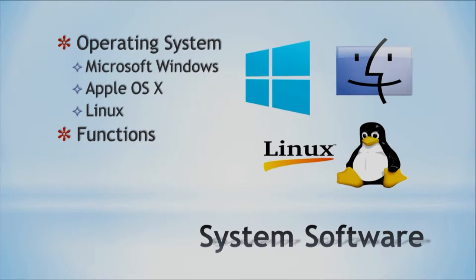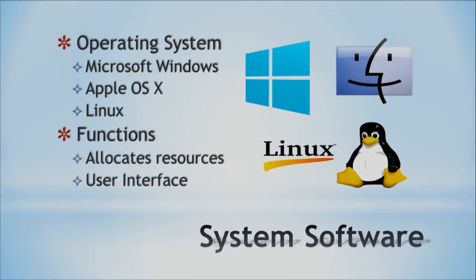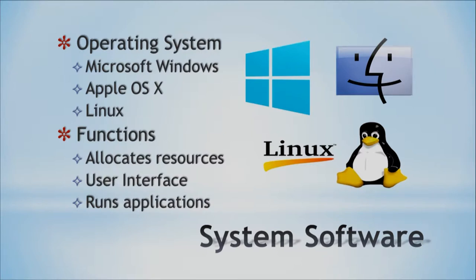Your operating system provides different functions. These vary from allocating resources to the user interface — we have many different types of user interfaces, and from Windows to OS X the user interface varies greatly. Finally, it allows us to run different applications that we install, such as your web browser.